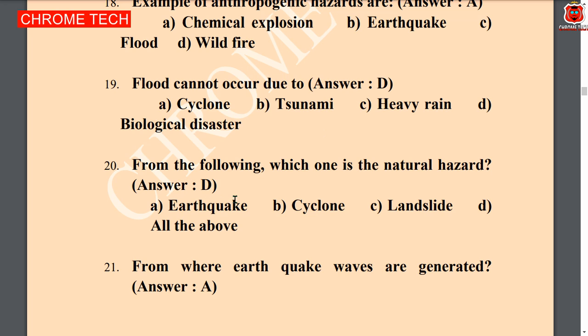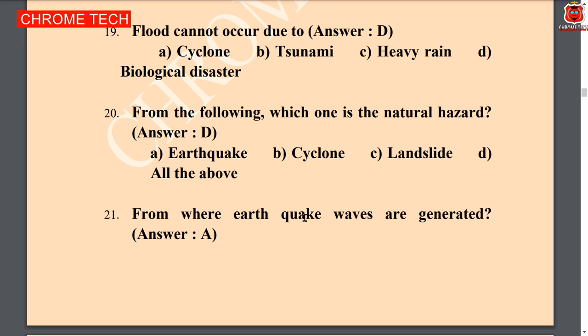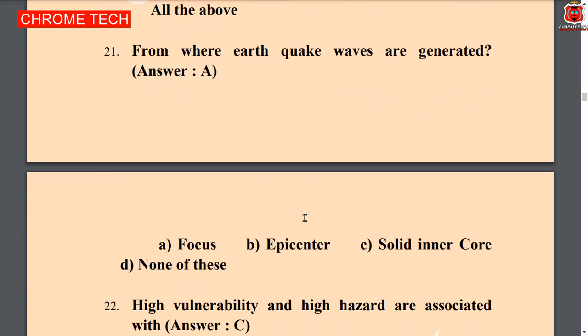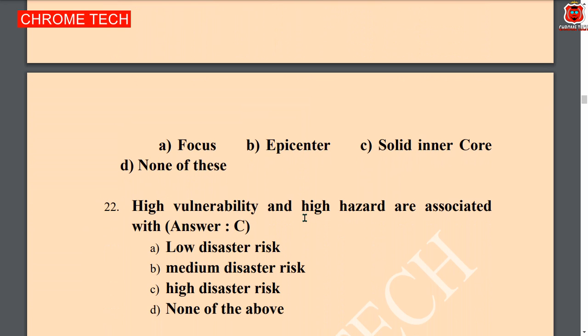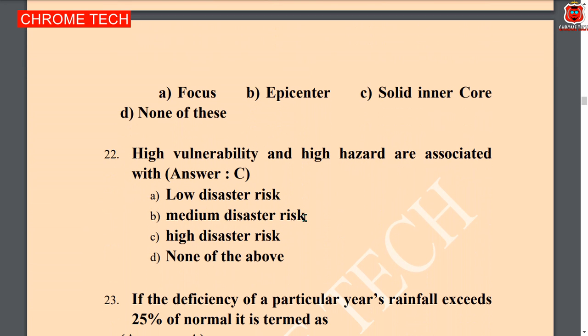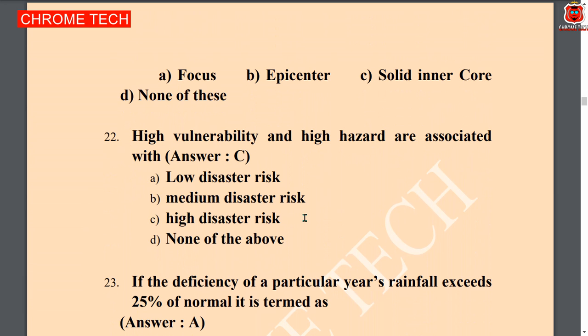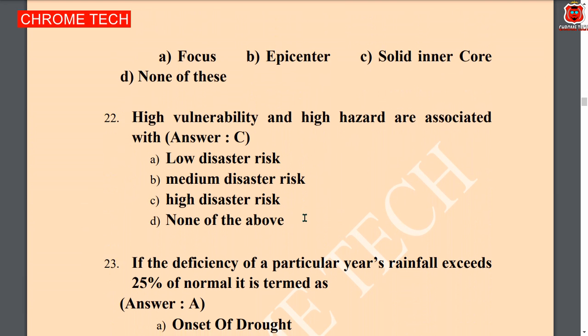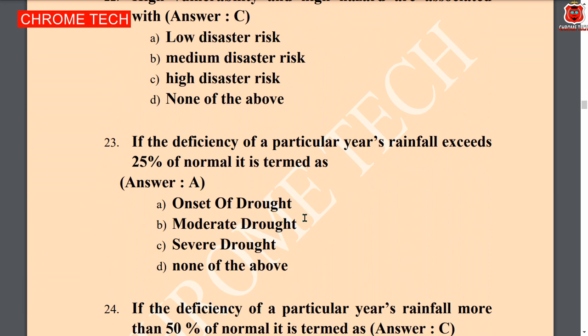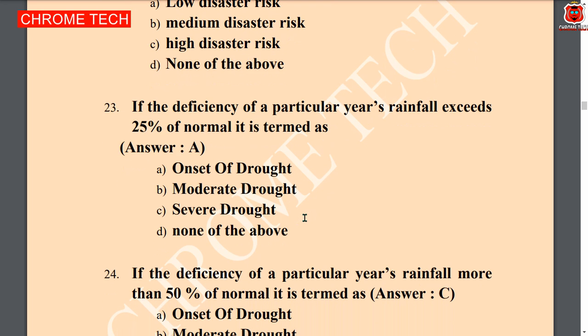Next question: flood cannot occur due to — biological disaster. From the following, which one is a natural hazard — option D, all of the above, is the correct answer. Next question: from where are earthquake waves generated — option A, focus. Focus is the correct answer. Next question: high vulnerability and high hazard are associated with — high disaster risk. High disaster risk is the correct answer.